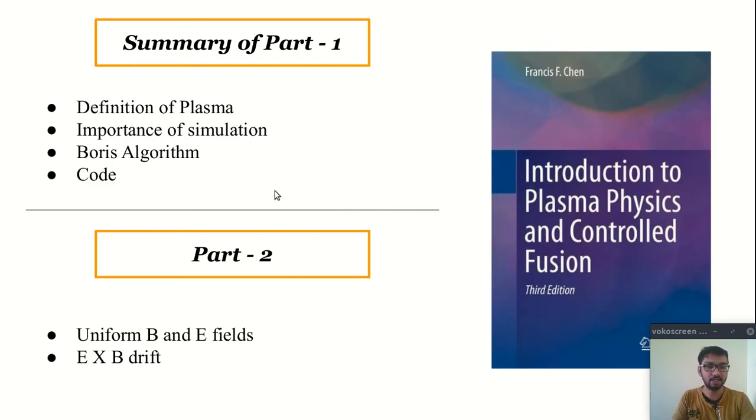So, this ends the first part of this video tutorial series. In this part, we have seen definition of plasma, importance of simulation, we have discussed Boris algorithm, and we have also seen our code. In next part, I am going to cover motion of charge particle in uniform magnetic and electric field, and I will also discuss E cross B drift. And, before I go, here is the recommendation.